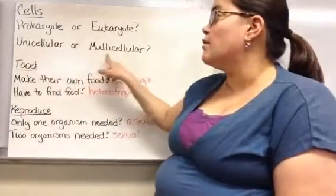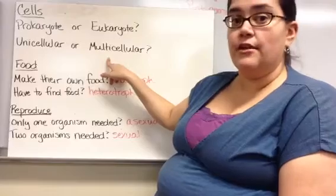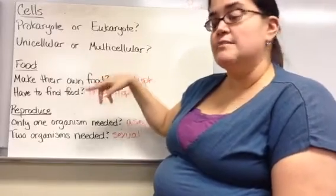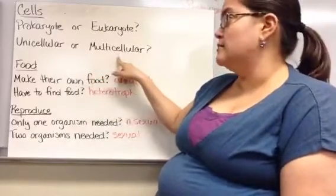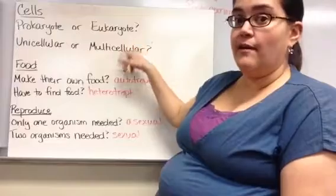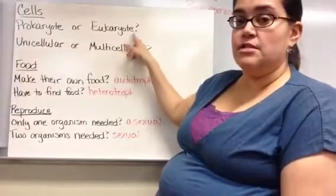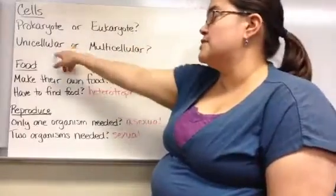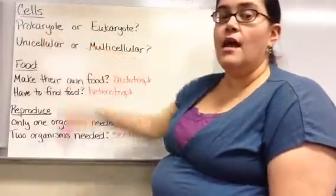The second question is whether the organism is unicellular or multicellular. If it's multicellular, it has to be a eukaryote, because those two things go together. If it's unicellular, there are a couple of different groups it could be placed in.